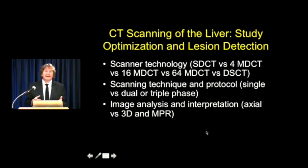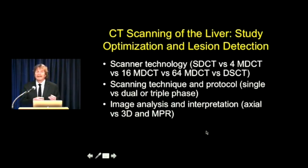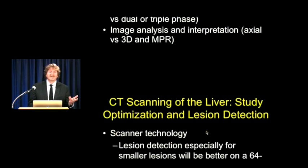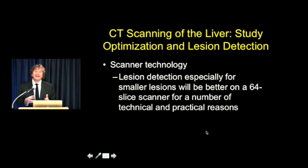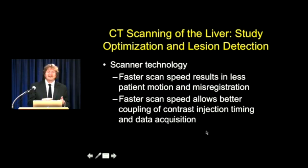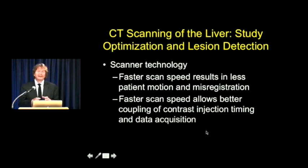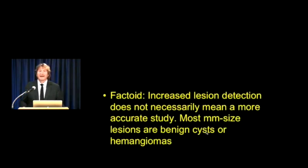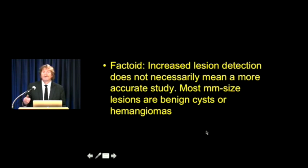Over time, we can do things a lot better. As scanners have gotten better, we can do a lot more. Our scanning technique now allows us to do two-phase or three-phase perfectly timed because we can scan very quickly. Our resolution is much higher, so we can do 3D imaging with isotropic data sets. When you talk about scanner technology, we have increased lesion detection, particularly for small lesions. The better the scanner, the more small lesions you will see - less patient motion, less misregistration, as well as better timing of contrast delivery and data acquisition, giving us perfect arterial phase and venous phase imaging. However, increased lesion detection does not necessarily mean a more accurate study, because most of what we pick up are small lesions that have no clinical significance.